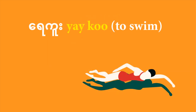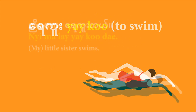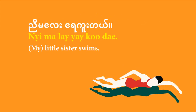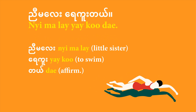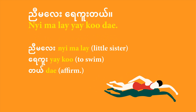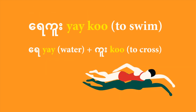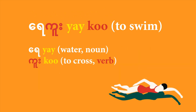Now take a look at a verb like 'yeku,' meaning to swim, which comes in two words. If you want to say your sister swims, you can say 'nyamale yeku dare' — my little sister swims. Nyamale is little sister, yeku is your verb to swim, and 'dare' is the affirmative sentence-ending. To negate the verb 'yeku,' you need to know what the real verb is in that cluster. A compound verb like 'yeku' has two parts: 'ye' is the noun meaning water, and 'ku' is the true operative verb meaning to cross. So in Burmese, to swim is literally to go across a body of water.